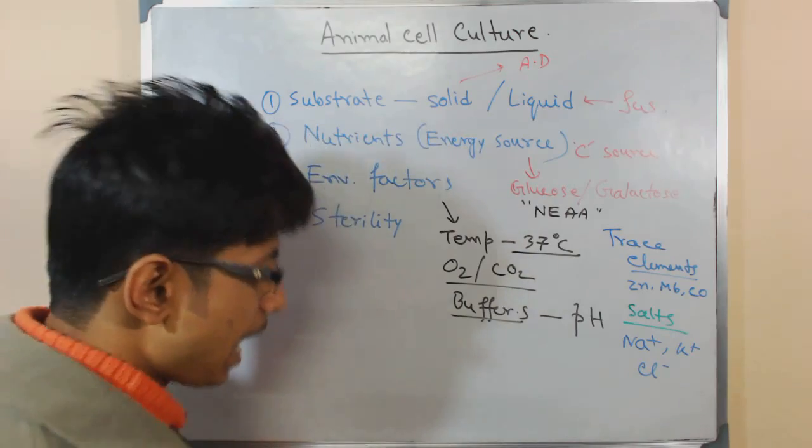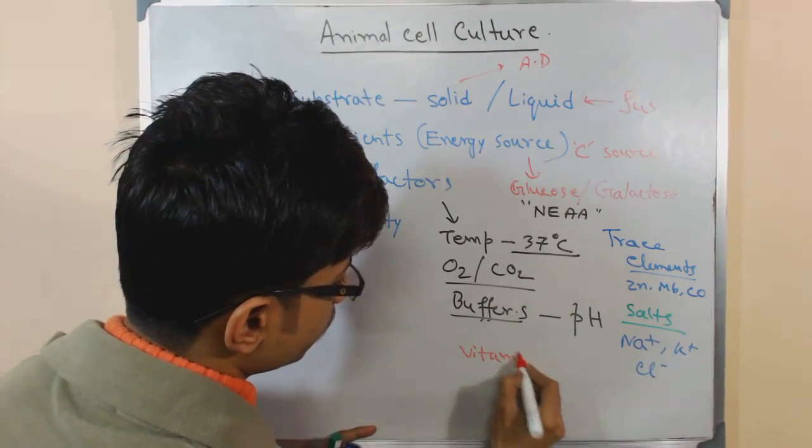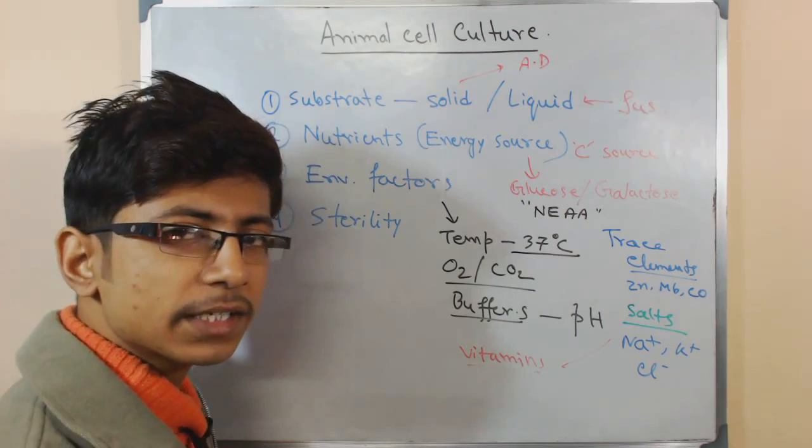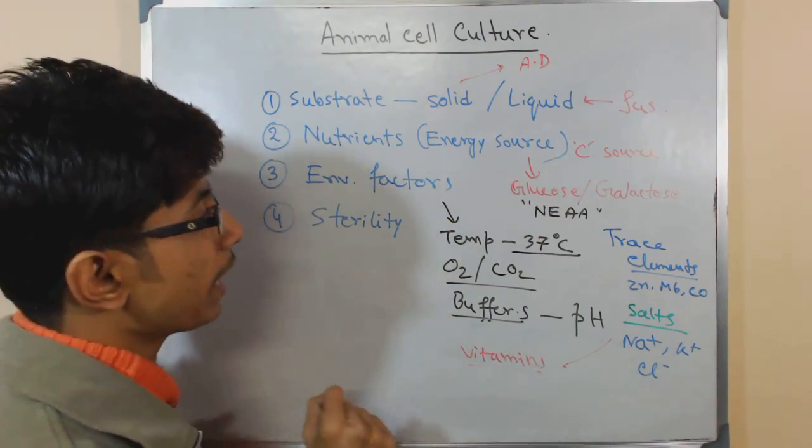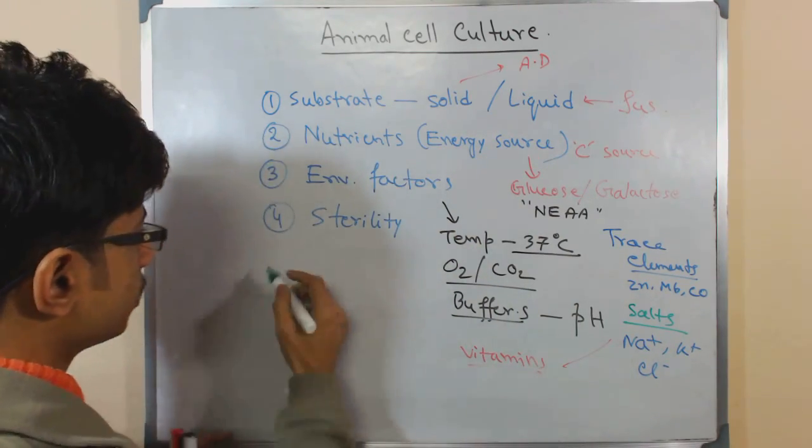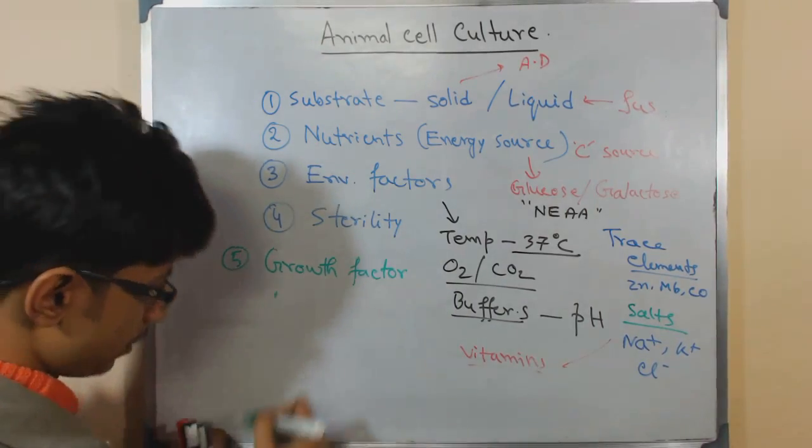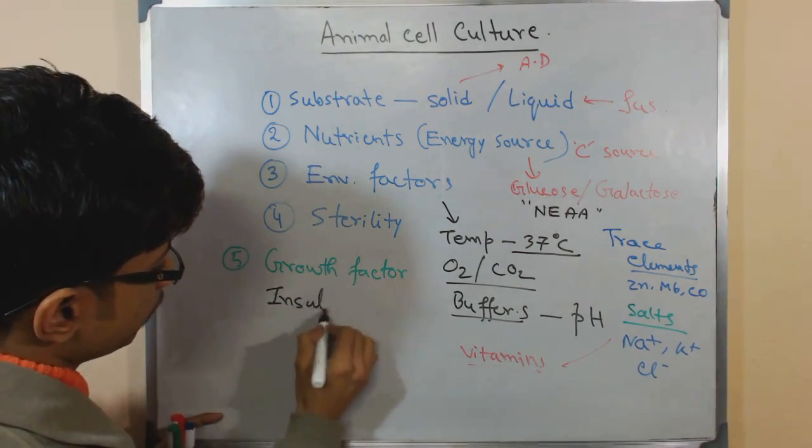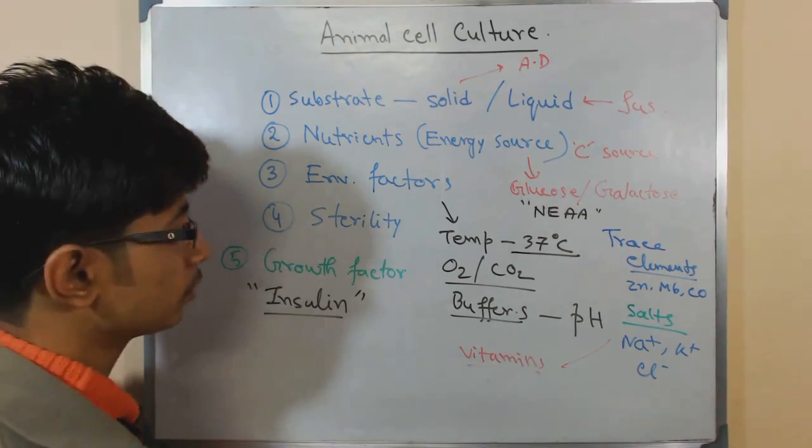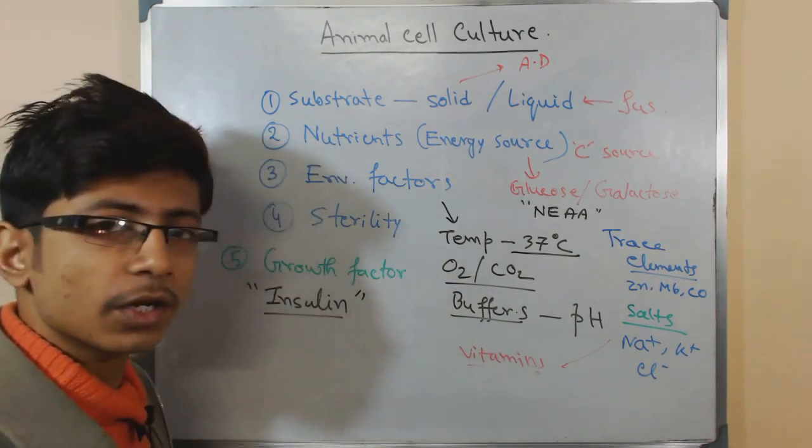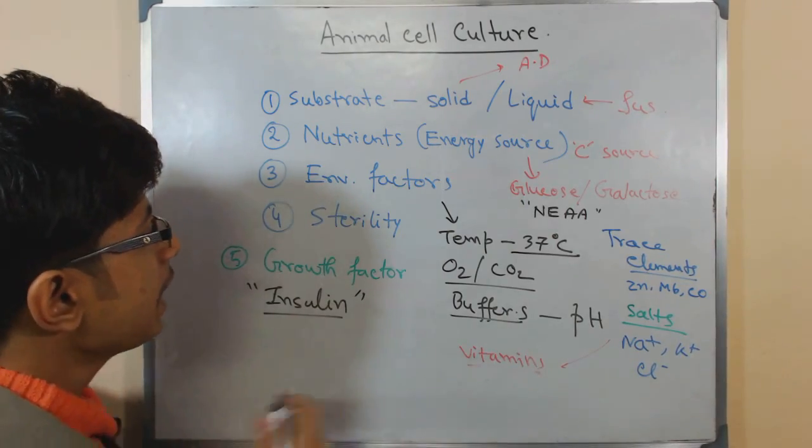Vitamins are also required among the trace elements. Vitamins also act as cofactors of different enzymes so we need to supply vitamins. And also we require growth factors - different hormones, growth hormones. For example, hormones like insulin can also act as a growth factor and many other hormones are also there. You need to use this for the growth of the cell because inside the organ these factors are already produced by different cells, but once we are doing this process in vitro we need to supply it from outside.